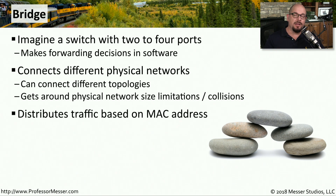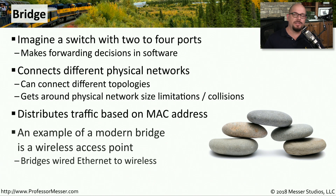Instead of repeating traffic to all interfaces like a hub, a bridge was more intelligent. It would look at the destination MAC address, find which interface on the bridge that MAC address existed on, and send traffic only to that interface. A good modern example of a bridge is a wireless access point, where you have a wireless network on one side and a wired ethernet network on the other. The wireless access point looks at the destination MAC address and decides whether to send traffic onto the wireless or the wired network.